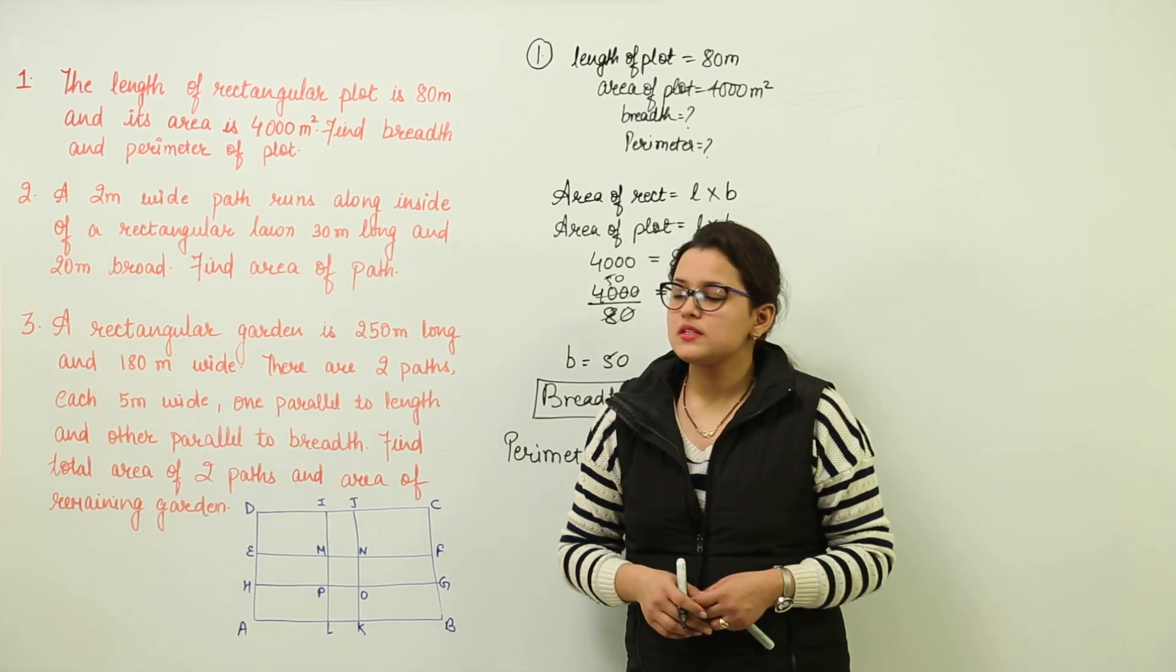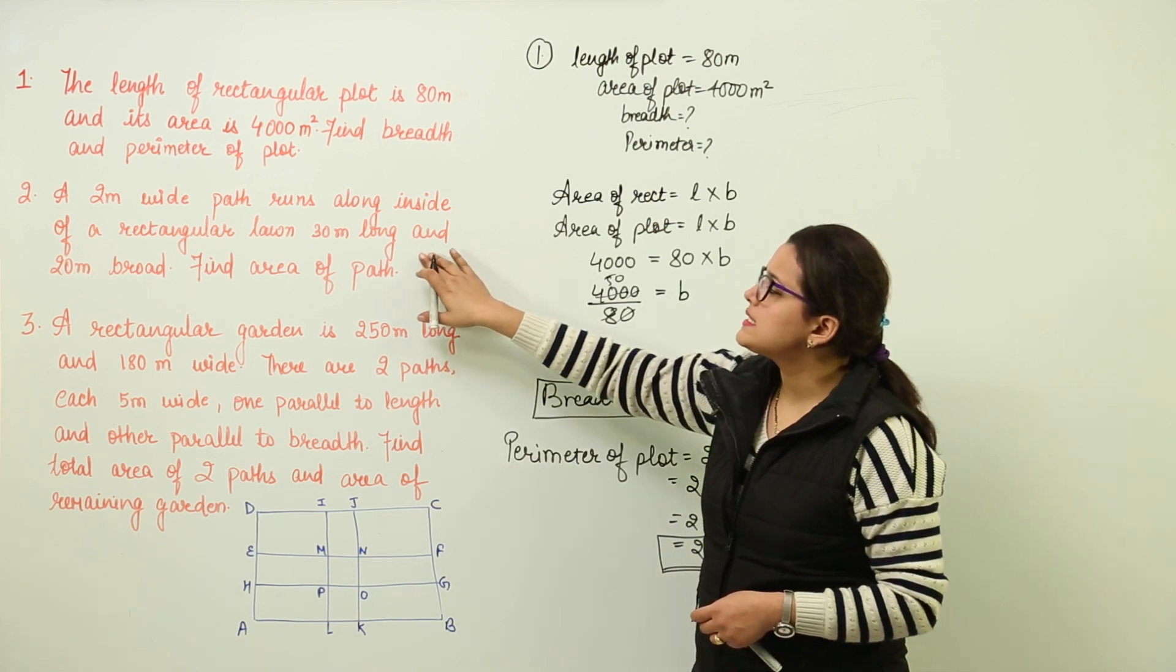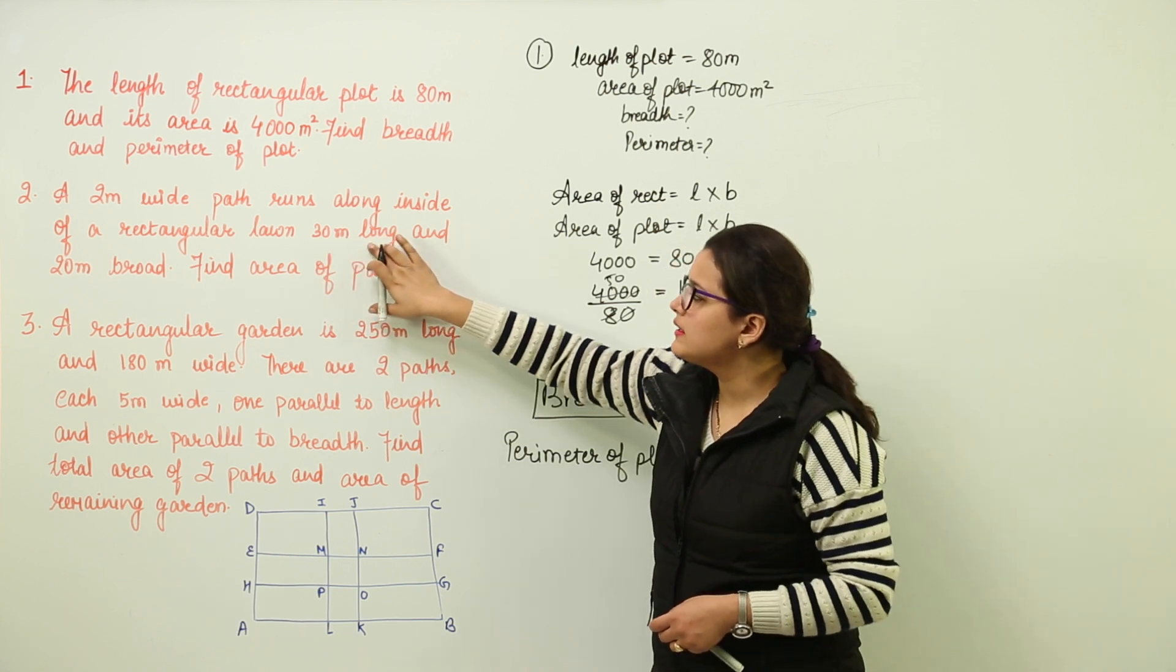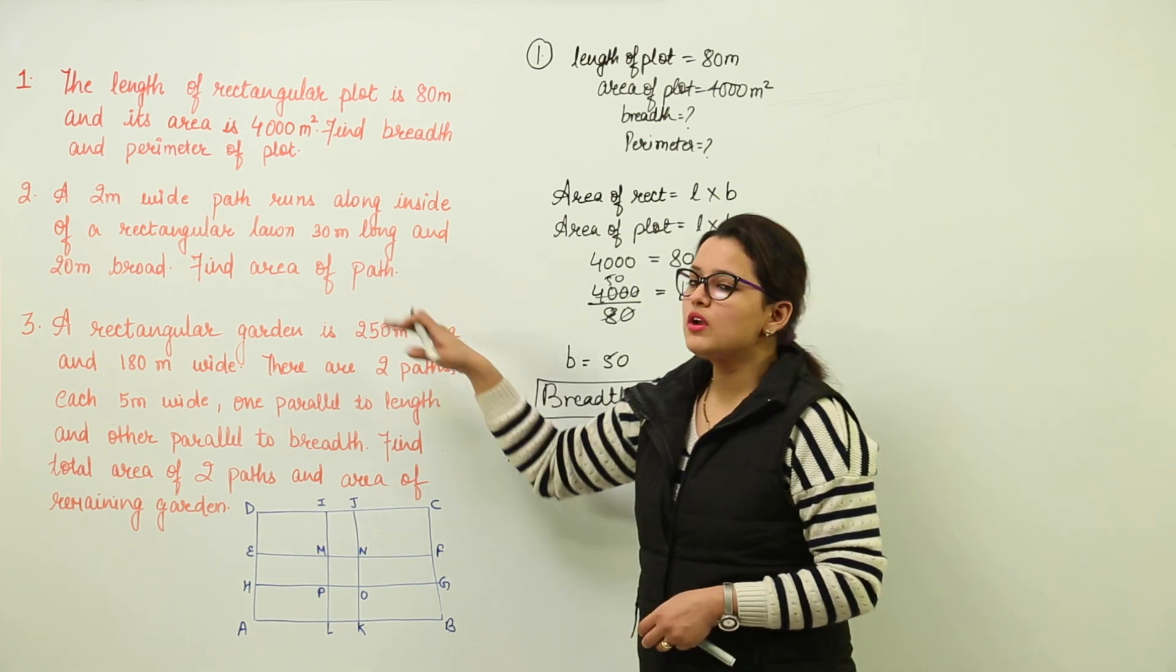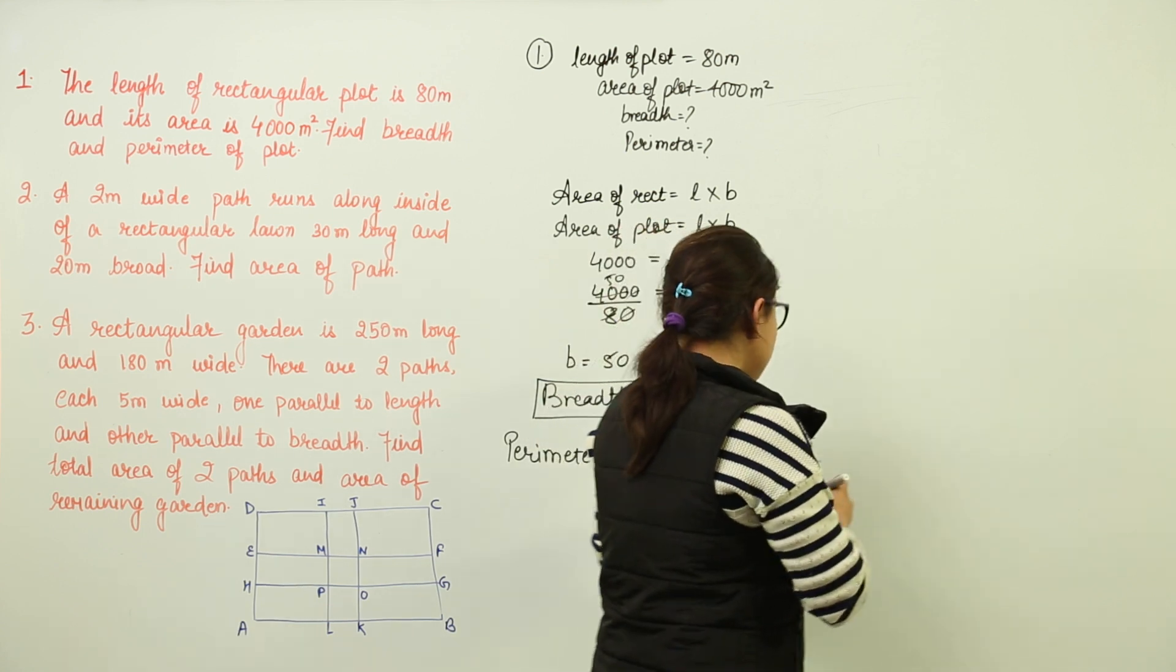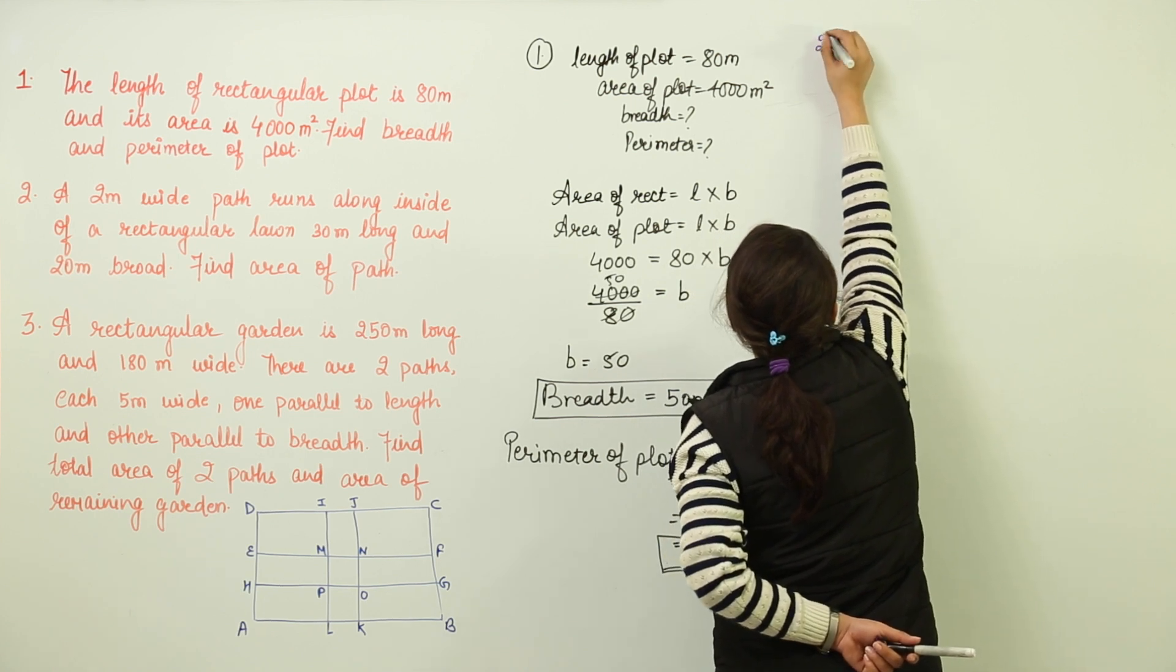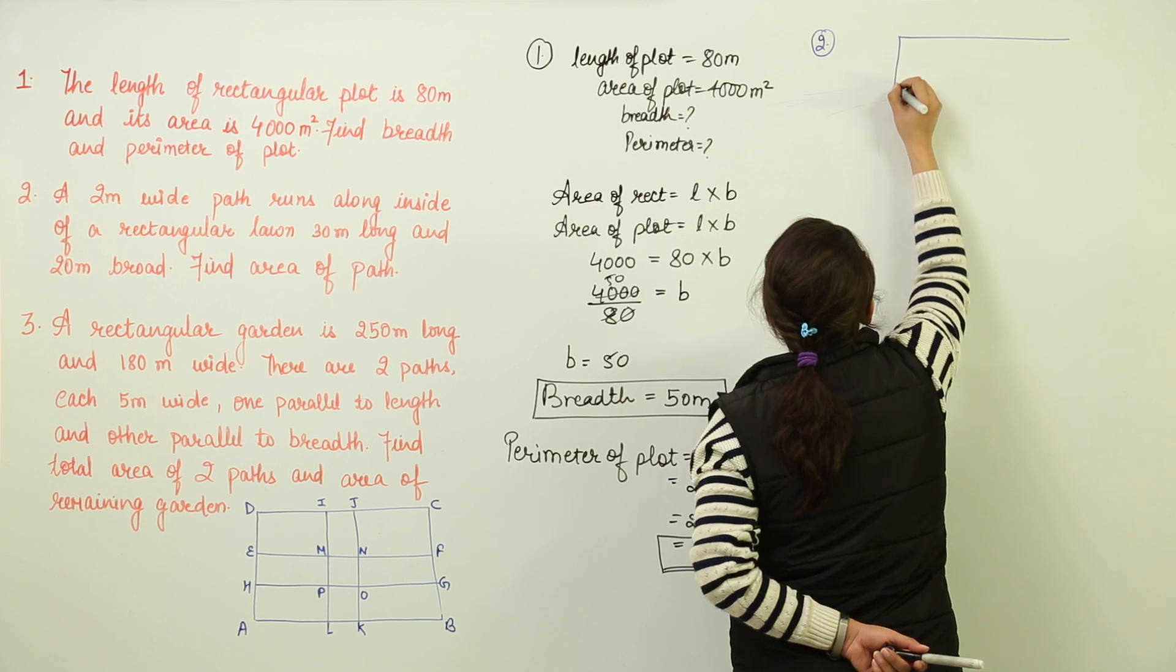Moving to the second question, we have a 2 meter wide path running along inside of a rectangular lawn. The lawn is having the length as 30 and breadth as 20 meters. We have to find out the area of that path. So first of all, let us understand and draw the figure to analyze what is the data given and what is to be found.